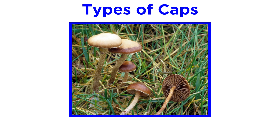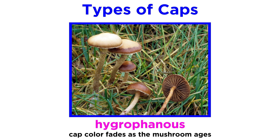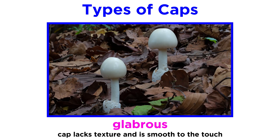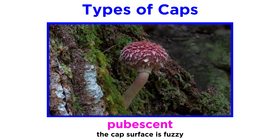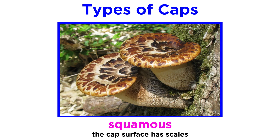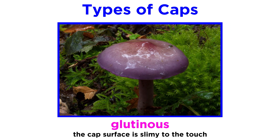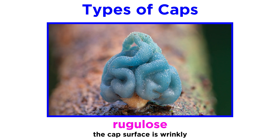These caps can have different textures and colors. If the cap color fades as the mushroom ages, it is termed hygrophanous. The cap is glabrous if its surface lacks any texture and is smooth to the touch, pubescent if its surface is fuzzy, squamous if it has scales, and glutinous if it is slimy. Many mushrooms also have a wrinkled or rugulose cap.